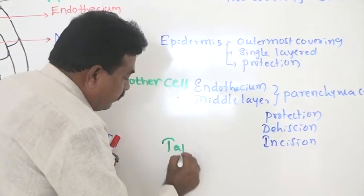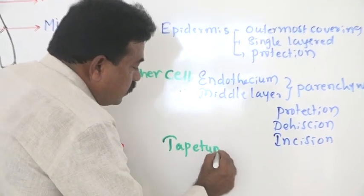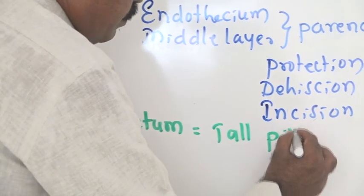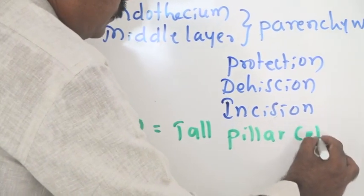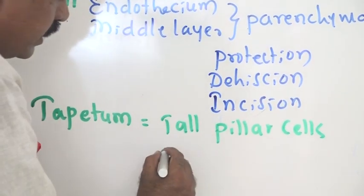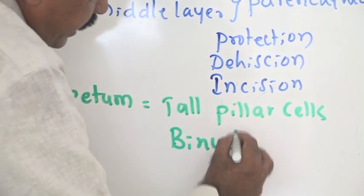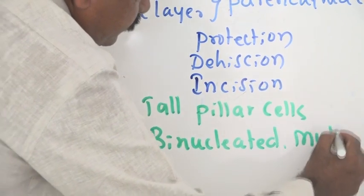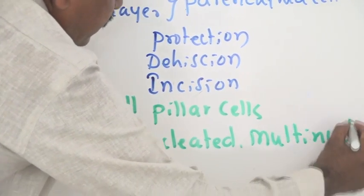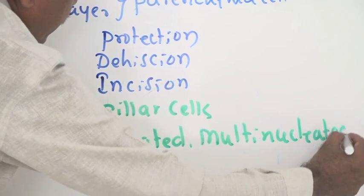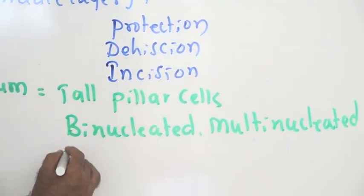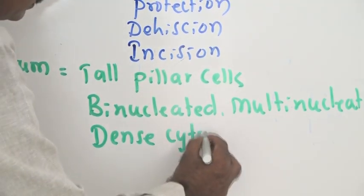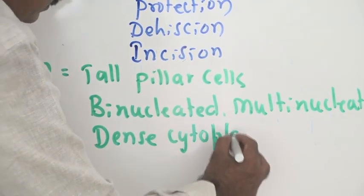The innermost and most significant layer is called the tapetum. The tapetum is composed of tall, pillar-like cells and is generally binucleated or sometimes multinucleated. These tapetum cells generally have dense cytoplasm — dense meaning rich in content.